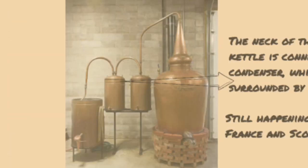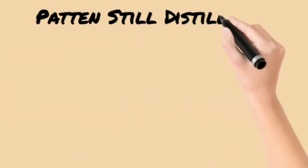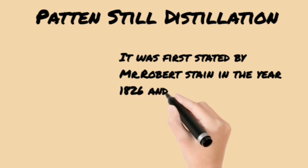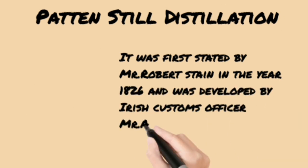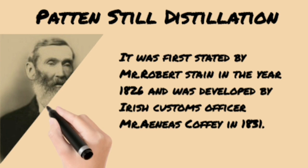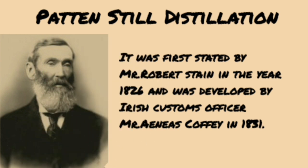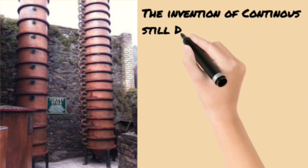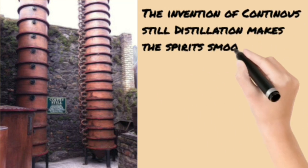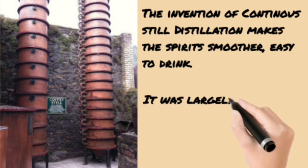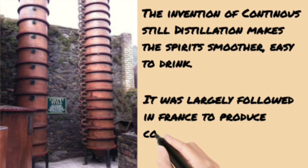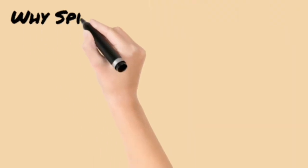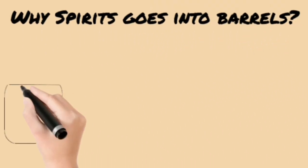Patent still distillation was first invented by Mr. Robert Stein in 1826 and further developed by Irish customs officer Mr. Aeneas Coffey in 1831. It has two apparatus called an analyzer and a rectifier, made of either copper or stainless steel. The invention of continuous still distillation makes spirits smoother and easier to drink, and it was largely used in France to produce cognac and armagnac.